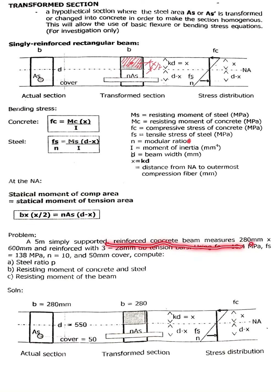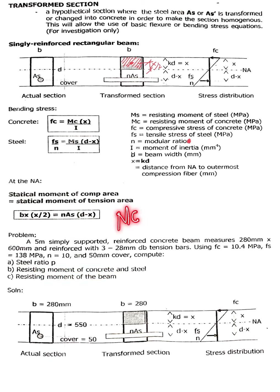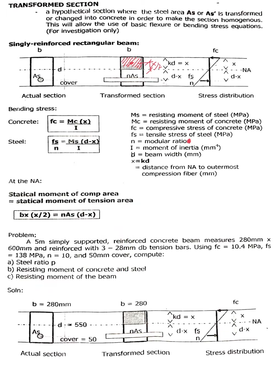Let's have a sample problem. You have a 5-meter simply supported reinforced concrete beam measuring 280 by 600 millimeters, reinforced with three 20mm diameter tension bars. Given: Fc equal to 10.4 MPa, Fs is 138 MPa, modular ratio N is equal to 10, and a cover of 50mm. Compute: A — the steel ratio rho; B — the resisting moments of concrete and steel, Mc and Ms; and C — the resisting moment of the beam.